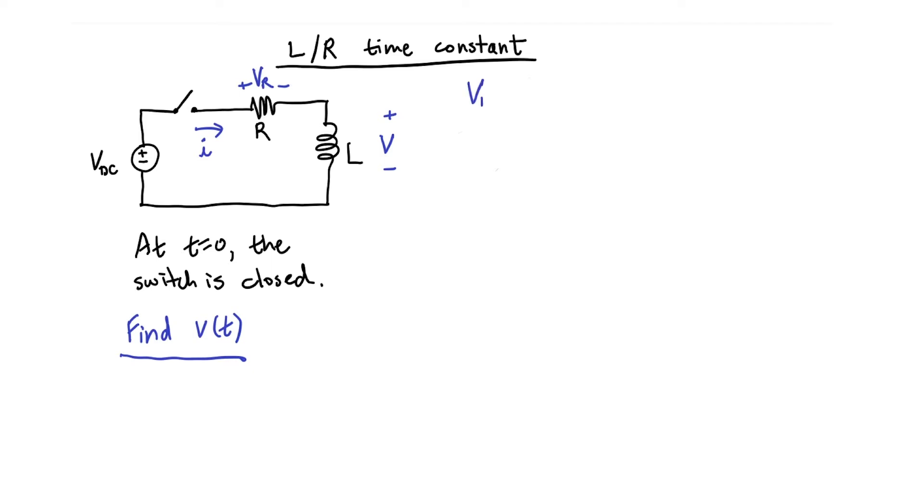To do that, I can start with Ohm's law, V equals I R. I also know how voltage and current are related in an inductor. And finally, I know how the voltages in the circuit are related because of the Kirchhoff voltage loop. So we have three equations, and this is enough information to fully solve the problem.